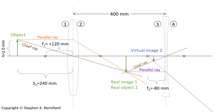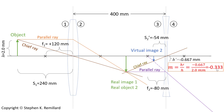The final image is inverted and virtual — it's not formed from real light; a virtual portion of the parallel ray is used to locate it. Using precise computer drawing tools, I measured the image distance to be 54 millimeters, scaled to match the 400mm lens separation. Measuring the image height gave 0.667 millimeters, giving a magnification of minus 0.333 — negative because it's inverted, and less than 1, meaning it's smaller. That's the solution by optical ray diagram.